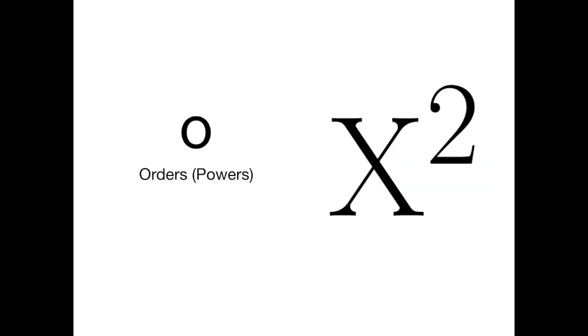The O stands for orders or powers, so if you have a number that's squared or cubed you need to make sure that you do that after the brackets if there are some. If they haven't got any brackets then you would do those first.